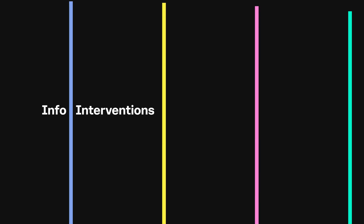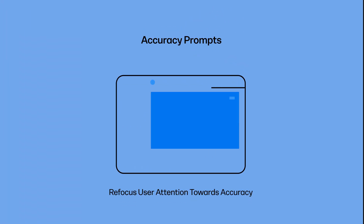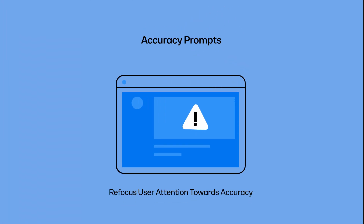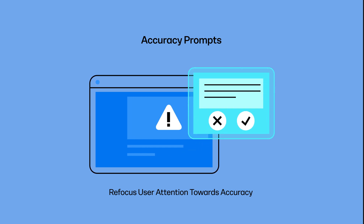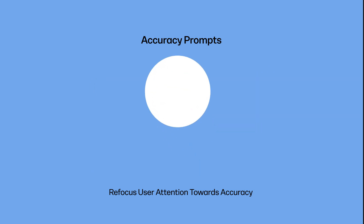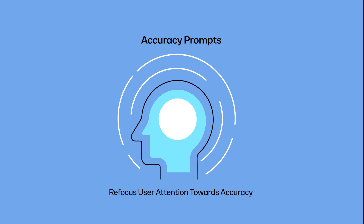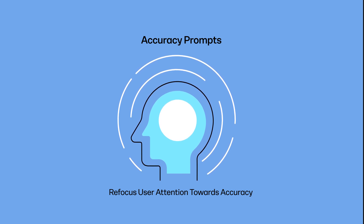InfoInterventions is a collection of research experiments that help people build information resilience at critical moments in their online journey. Accuracy prompts ask individuals to consider the veracity of content by providing bite-sized media literacy tips, reminding them to think twice before engaging with false information.